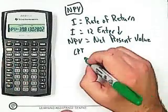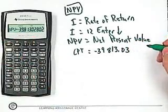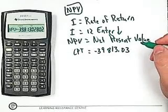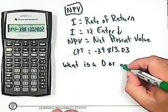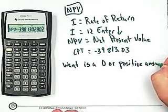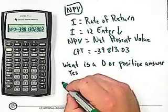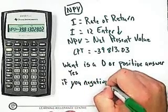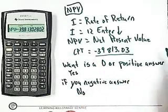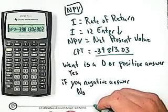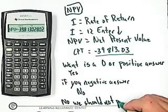I get a negative answer: negative $39,813.03. When computing Net Present Value, what you want is a zero or positive answer — if you get that, you say yes. If you get a negative answer, you say no. Our answer was negative $39,813.03, so should the company go ahead with this product? No, we should not produce this product.